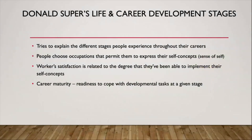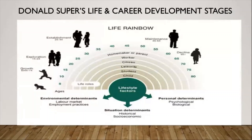The second theory we're going to discuss is Donald Super's life and career development stages. This theory tries to explain the different stages that people experience throughout their work careers. People tend to choose occupations that allow them to express their self-concept, or who they are, and the more a job fits their sense of self the more satisfied the person is. This theory has five stages and uses a graphic called the life rainbow, which starts from birth and goes all the way up to 80 years old.